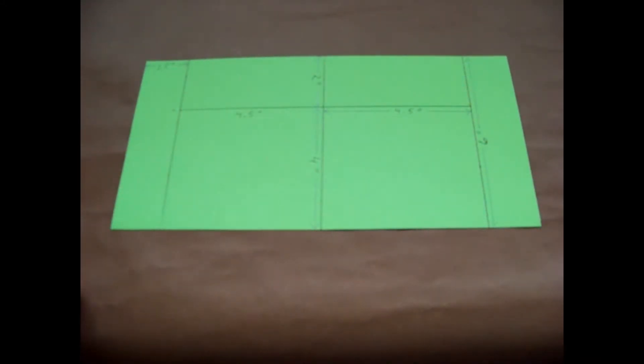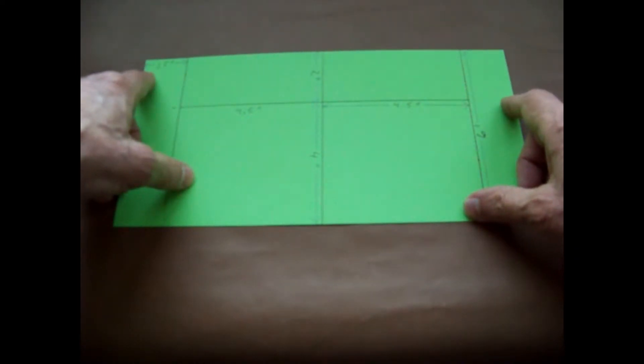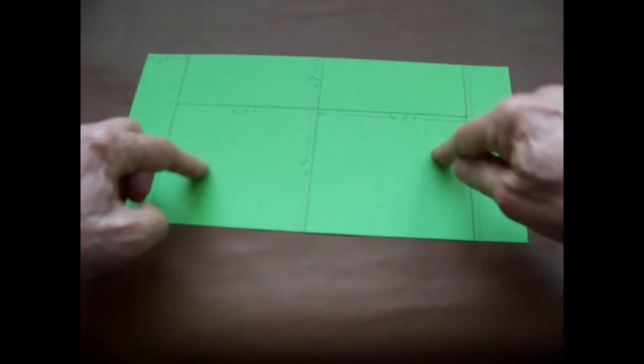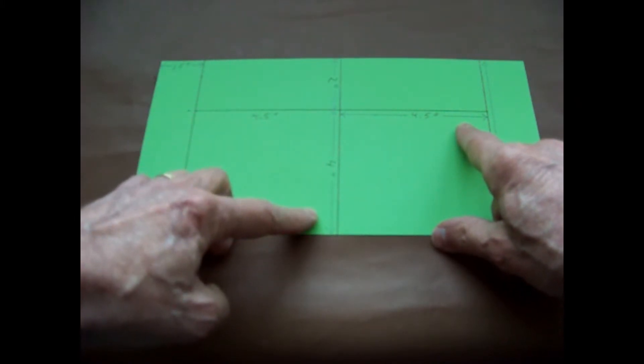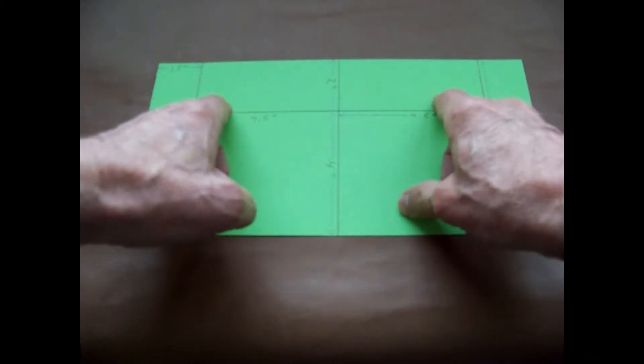The measurements of the rectangles are 6 inches by 1.5 inches for the two outside rectangles. The larger rectangles in the center are 4.5 inches by 4 inches and the smaller rectangles in the center are 2 inches by 4.5 inches.